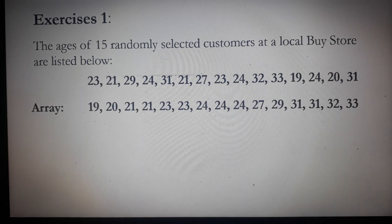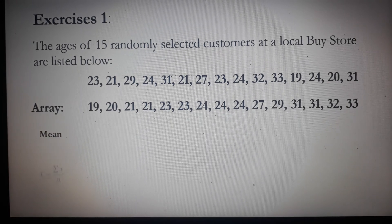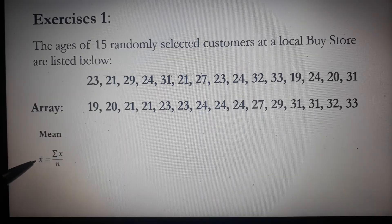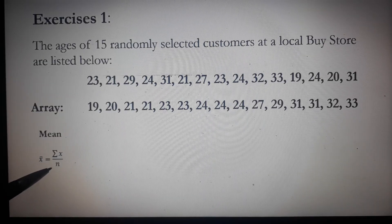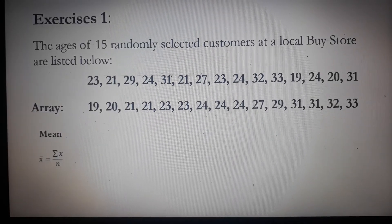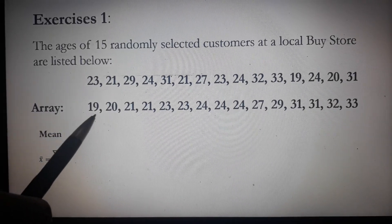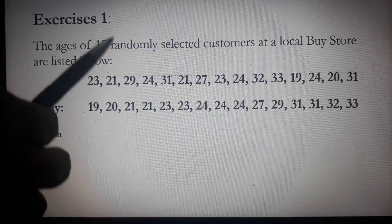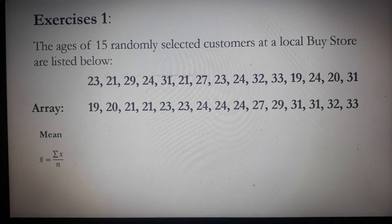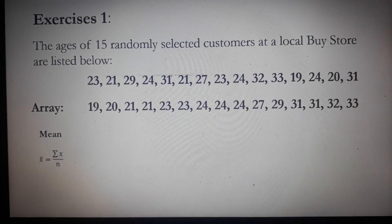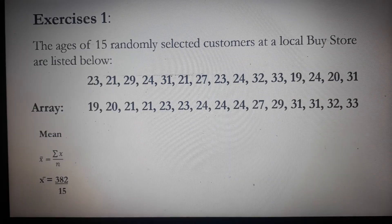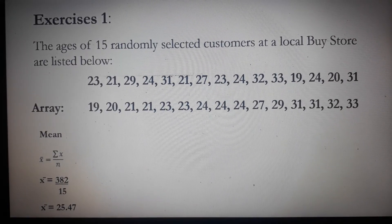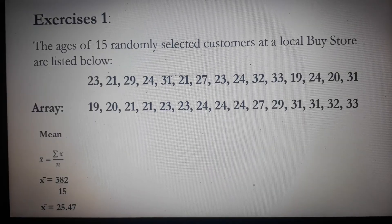Now, how can we determine the mean? We will use this formula. Mean is represented by x̄ (x with a bar). Mean equals the sum of all the scores divided by the number of cases. Simply add all the ages from 19 to 33 and divide by 15 since the data were derived from 15 customers. When I added all the ages, I got 382 divided by 15, which equals 25.47.